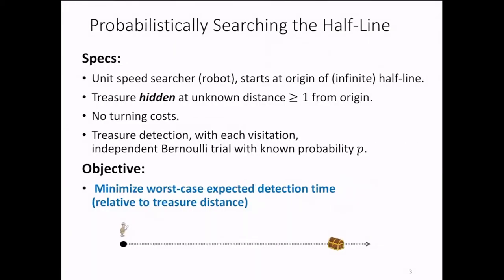Our problem is classified as a search type problem. We have a unit speed searcher who starts at the origin of a half-line. The searcher can move anywhere on the half-line, changing directions without incurring extra time.